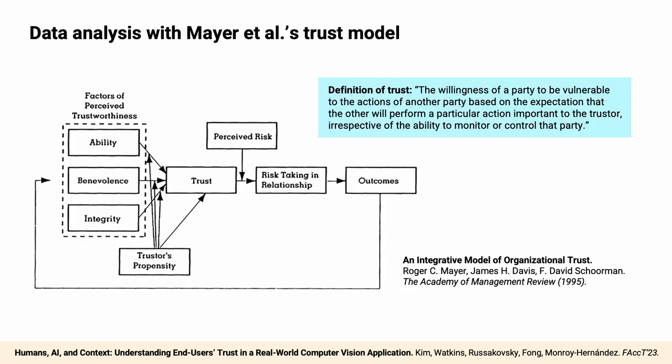Concretely, we used Mayer et al.'s trust model as a high-level framework. We chose this model because its process orientation fit our work's objective of holistically understanding trust, while cleanly delineating trust from its antecedents, context, and products. Its trust definition, shown on the slide, is one of the most widely used trust definitions in the literature. Based on this model, in our analysis we separated trust from trustworthiness perceptions that precede it and trust-related behaviors that proceed from it.